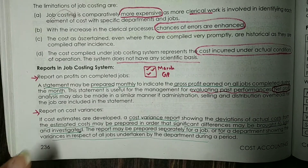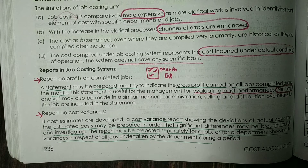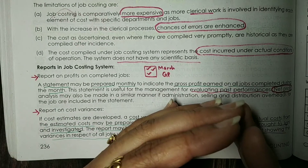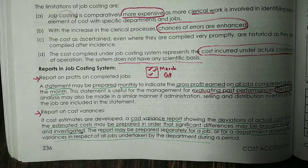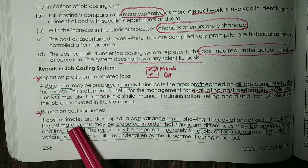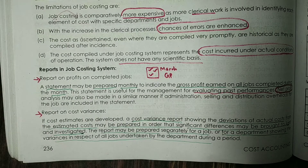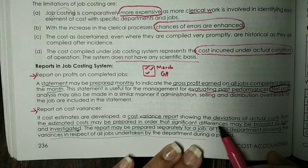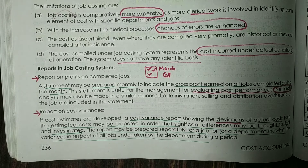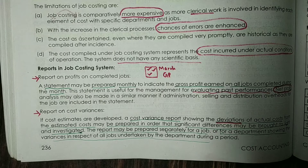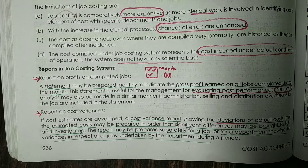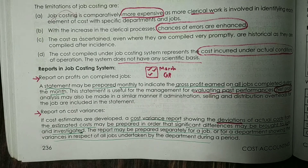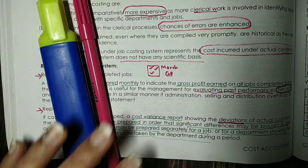The next report is the report on cost variances. Cost variance means: if we compare the estimated or standard cost with the actual cost incurred and find any deviations, those deviations are called cost variances. If we identify such variances, we can investigate and improve. This cost variance report can be prepared for a complete department for a particular accounting period.